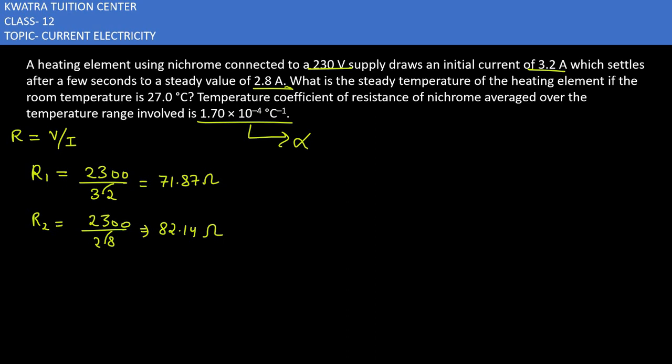We have the values of R1 and R2. The value of alpha is 1.7 into 10 to the power of minus 4 degree Celsius inverse. Now we need to find the steady temperature T2, with R2 corresponding to T2 and R1 corresponding to room temperature 27 degrees Celsius. T1 is known, T2 is unknown.